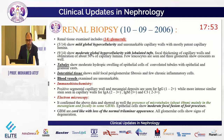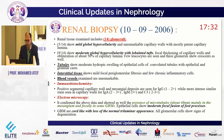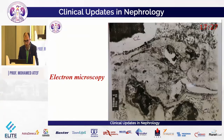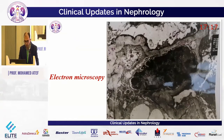On electron microscopy, there was the presence of microtubules approximately 40 nanometers in the mesangial and focally in some glomerular basement membrane. Epithelial cells showed moderate focal fusion of foot processes. Glomerular basement membranes were thickened with loss of normal trilaminar appearance, and all glomerular cells showed signs of degeneration.